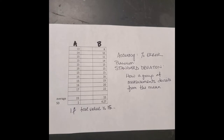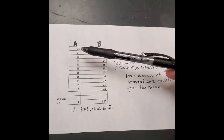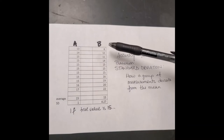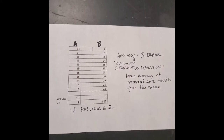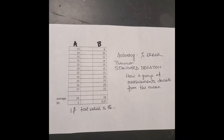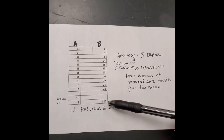However, both of these data sets are not very precise. Set A has values ranging from 13 to 17, and set B has values ranging from 8 to 22 — so B is clearly less precise than A. We use a statistical tool called standard deviation to determine how precise a set of measurements are. It describes how a group of measurements deviate from the mean. The standard deviation for group A is 1, and for group B it is 4.27.